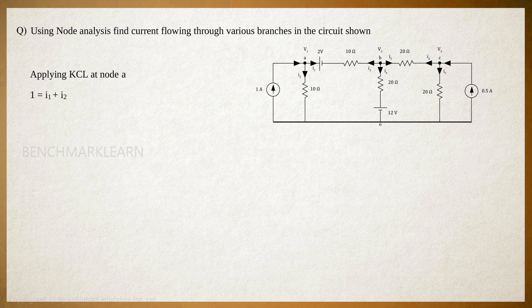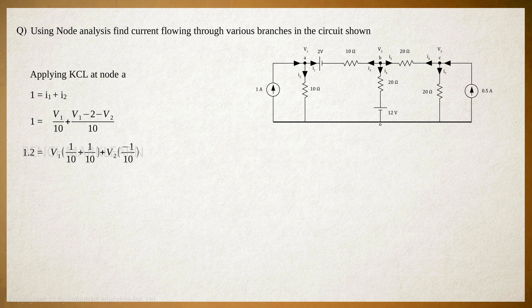1 is equal to I1 plus I2. Expressing currents in terms of node voltages, we get 1 is equal to V1 by 10 plus (V1 minus 2 minus V2), the whole divided by 10. Or, 1.2 is equal to V1 into (1/10 + 1/10) plus V2 into (−1/10). Or, 1.2 is equal to 0.2V1 minus 0.1V2. Let this be equation number 1.